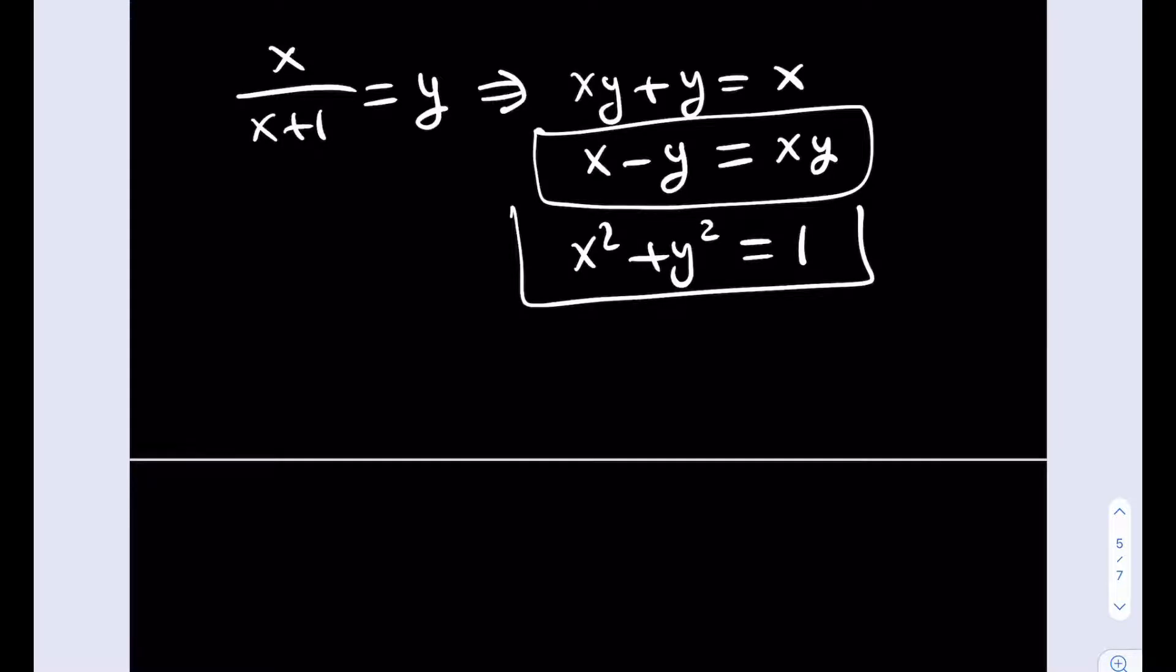Now, what are we going to do from here? Well, now we have a system of equations in two variables. So let's write the second equation like this: x minus y quantity squared plus 2xy equals 1. And we know that x minus y is equal to xy. Right? Okay, awesome.